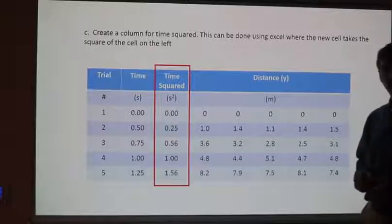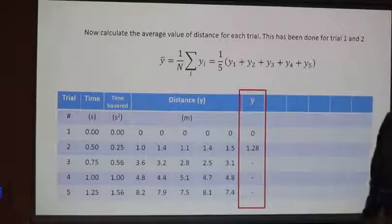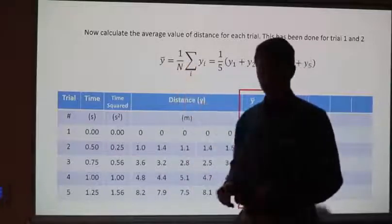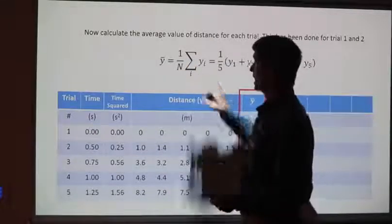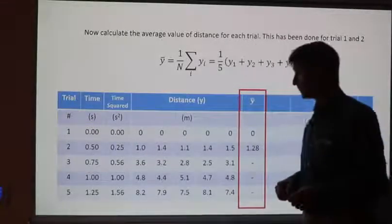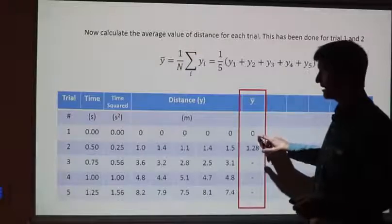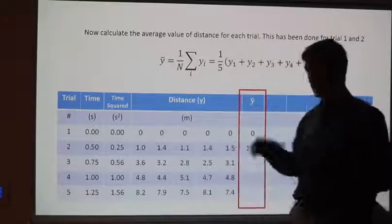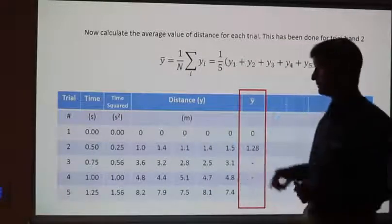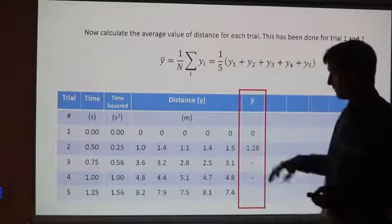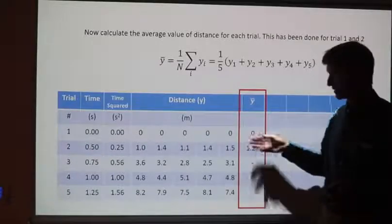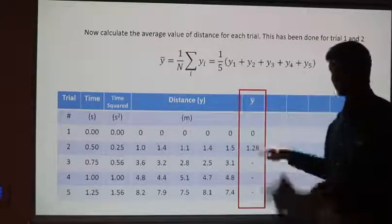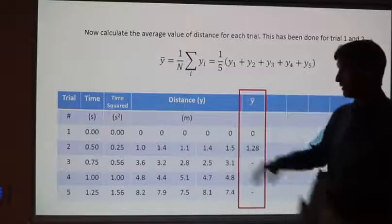Now I want to do the average column. This seems more complicated than it actually is. The mean equals one over the number of measurements times the sum of all individual measurements — there are five measurements. In the cell, set it equal to the sum of all five cells divided by five. I did it for the first couple; notice I kept three significant figures, which is probably wise even though all of these have two significant figures.